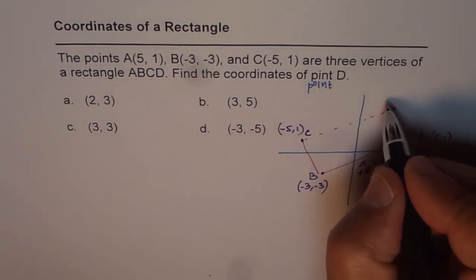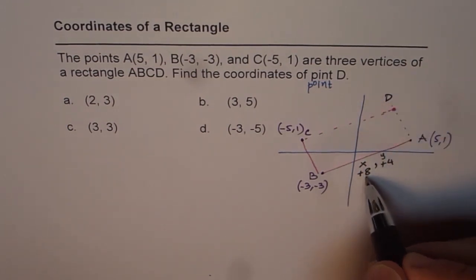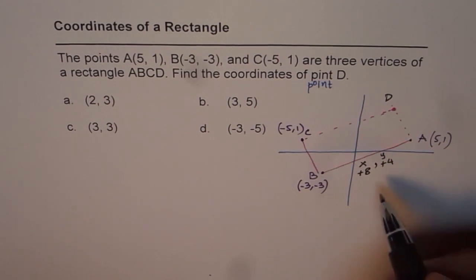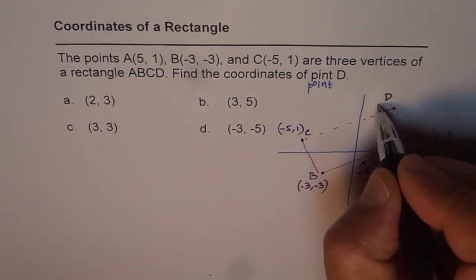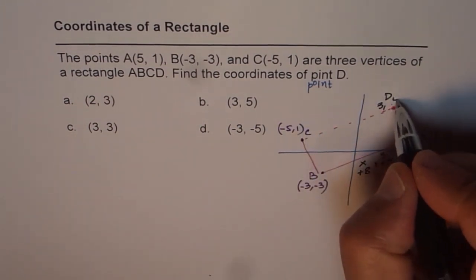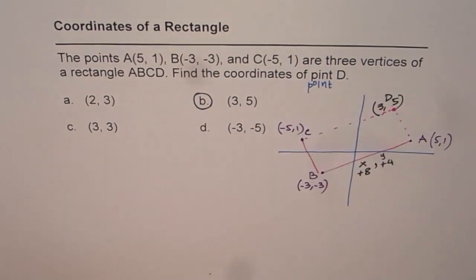Similarly, if I want point D, what should I do? I should add 8 to my x value and 4 to my y value, correct? 8 plus -5 is indeed 3, right? And 4 plus 1 is 5. So that gives me coordinates of D, which is option B.